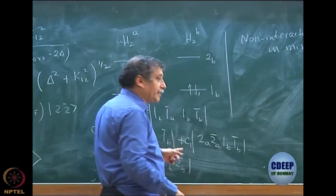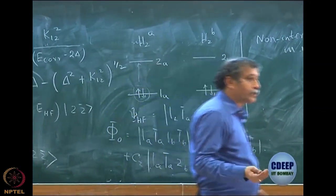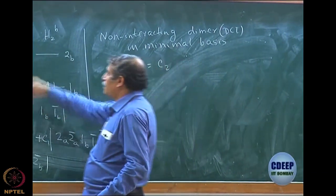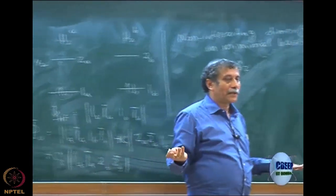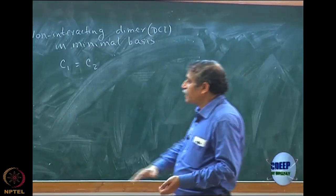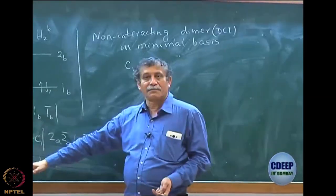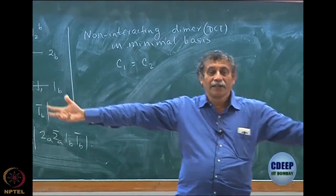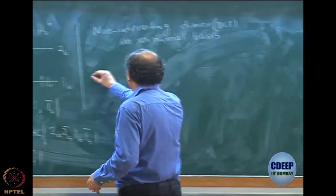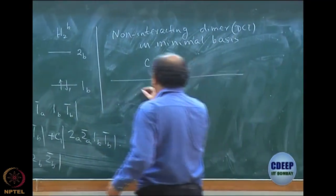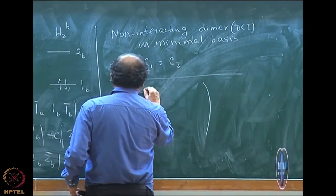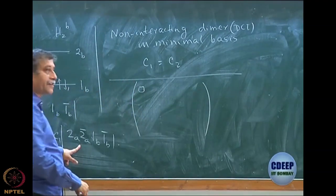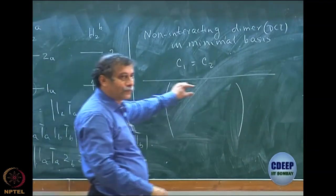Without even doing the calculation, you can show C1 equals C2 because both hydrogen molecules are identical — there is no reason to distinguish between the two determinants. Then I can set up the CI matrix just as we have done. First element is 0, then I have Hartree-Fock with each doubly excited configuration.